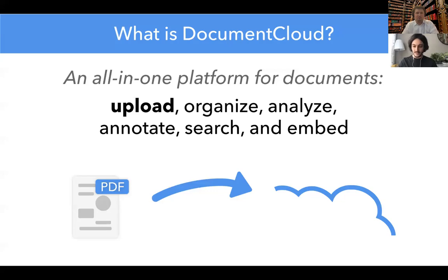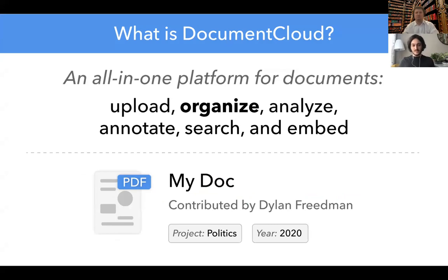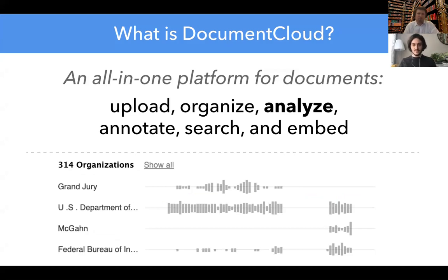You might upload one PDF file or an entire collection of PDFs. Once they're uploaded, you can organize them — put them into projects, which are basically collections of documents, or you can add tags, key-value pairs, and other ways to add metadata to the document that you can later search over. Document Cloud will also pull the text out of documents. Even those that only have scanned pages, it'll OCR the document. And it'll pull out entities — people, places, and organizations — giving you a really quick way to scan through that.